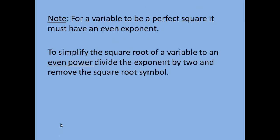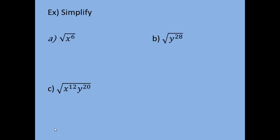For variables — for a variable to be a perfect square, you have to have an even exponent. To simplify the square root of a variable with an even power, all you have to do is divide that power by 2 and then remove the square root symbol because you've done the operation. So the square root of x to the 6th: it has an even power, so it's a perfect square. Taking the square root just gives you x to the 3rd power — we get the 3rd power because it's 6 divided by 2. That would be the answer.